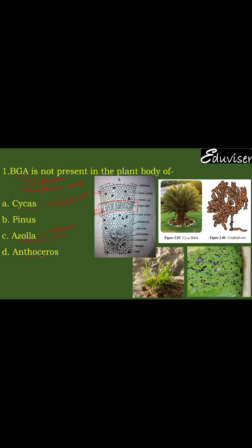The fourth option is Anthoceros, which is a bryophyte. In Anthoceros, the mucilage cavities in its internal anatomy contain colonies of Nostoc, which is also a blue-green algae. Anabaena is also BGA; Nostoc and Anabaena are found in coralloid roots and mucilage cavities respectively. The only remaining option is Pinus — also a gymnosperm — but no BGA is present in Pinus.